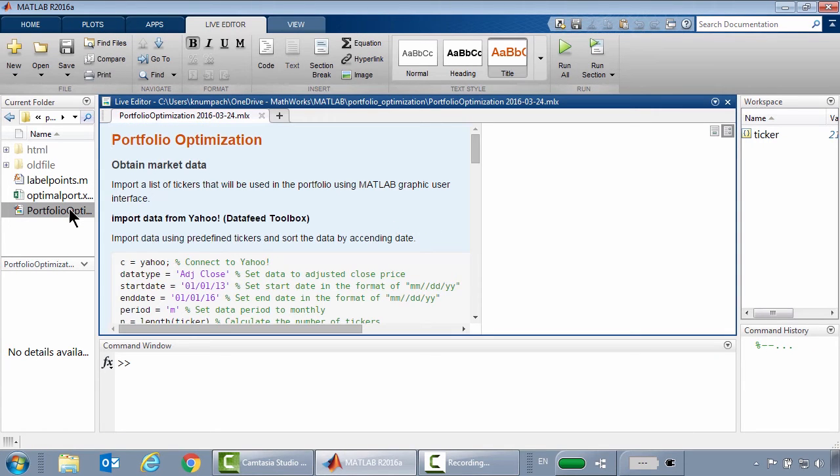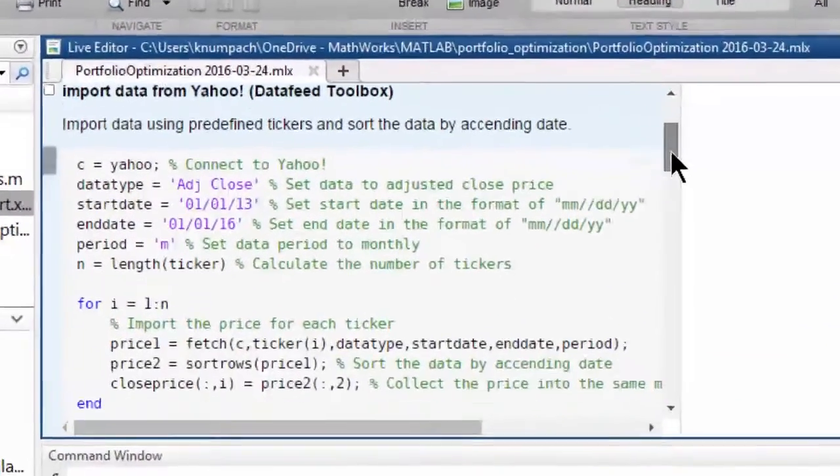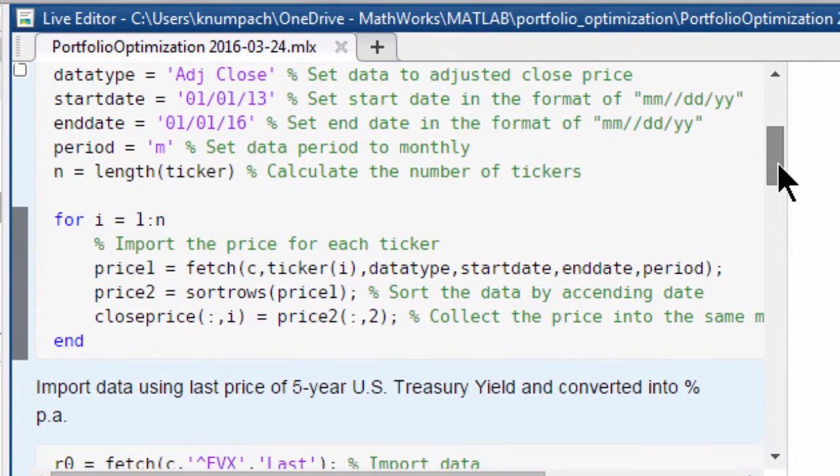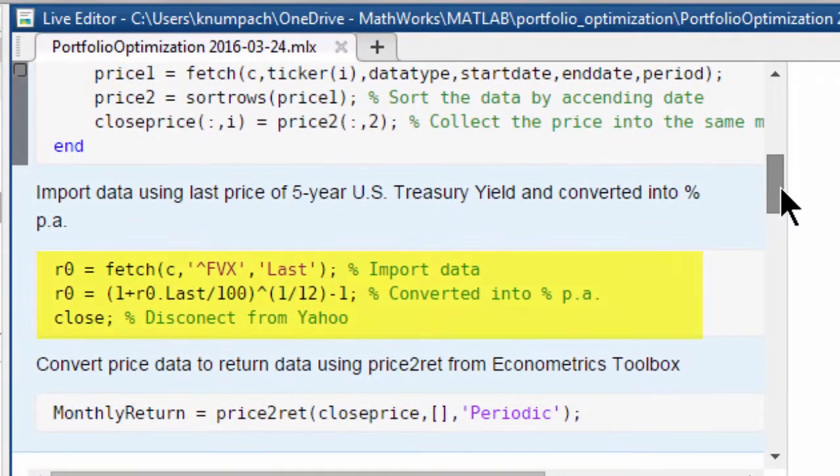I've already got all tickers. We can easily connect to Yahoo and retrieve the data of each ticker one by one using a for loop. Moreover, I also import the last price of five-year Treasury yield from Yahoo and convert it into percent per month, which will be used as a risk-free asset later. We can simply convert the price data into return data in just one line of code by using the price to return function from econometrics toolbox.